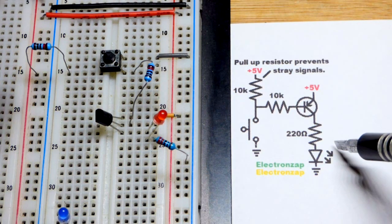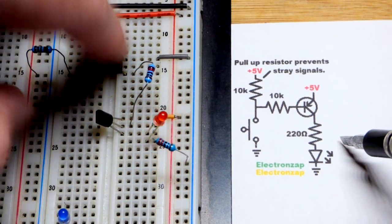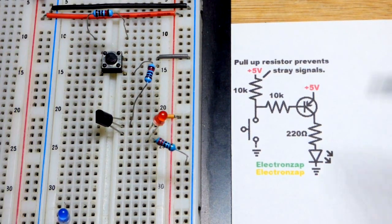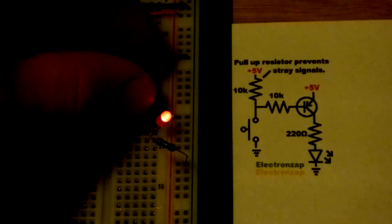We have the switch here. We don't need the pull-up resistor for this to operate. The reason we need the pull-up resistor is if I turn the light off and touch the resistor there, you can see my body can actually give the PNP bipolar junction transistor